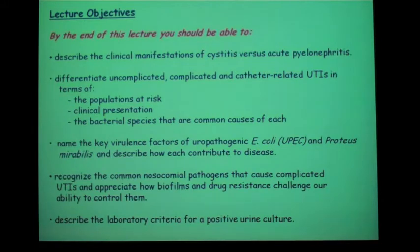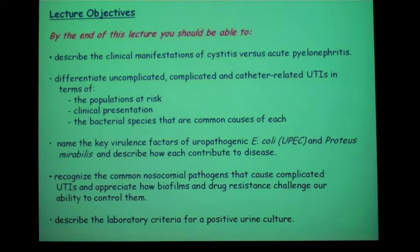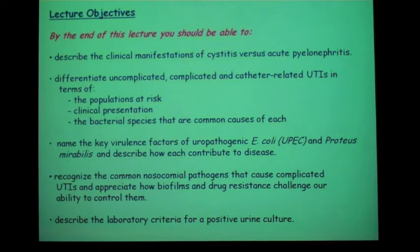We'll focus on a couple of the pathogens — uropathogenic E. coli, called UPEC, and Proteus mirabilis, and a few others. But for the most part, we'll be talking in general terms about the bacteria that cause them. UTIs are a huge problem in hospital settings, so we'll talk about nosocomial pathogens and how biofilms contribute to UTI infections in hospitals. Then we'll end with how the laboratory diagnosis of UTI is made.